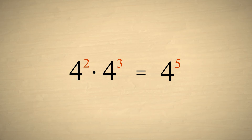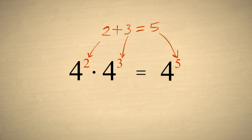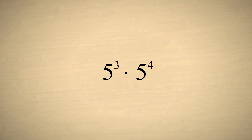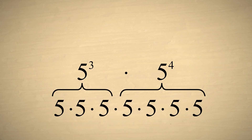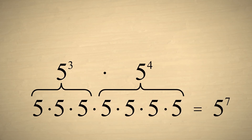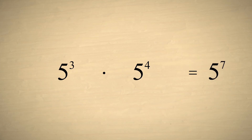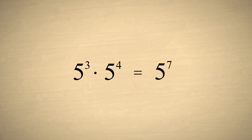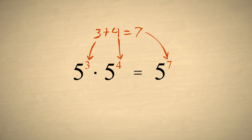Notice that we can get this result by simply adding the exponents. This is true any time we multiply exponential expressions with the same base. For example, multiplying five to the third power times five to the fourth power is the same as multiplying seven fives, which is five to the seventh power. Once again, we get this result by adding the exponents. So to multiply exponential expressions with the same base, add their exponents.